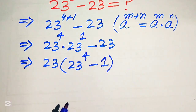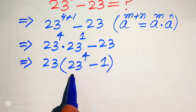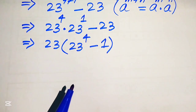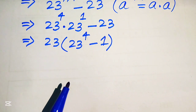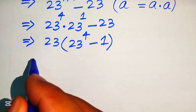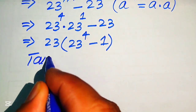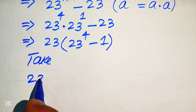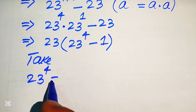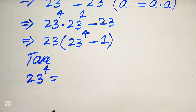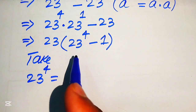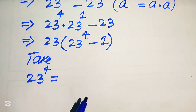In the next step our target is to find the value of 23 to the power of 4. In order to do that, we will first calculate 23 to the power of 4 separately, and at the last step we will substitute that value back into the expression.